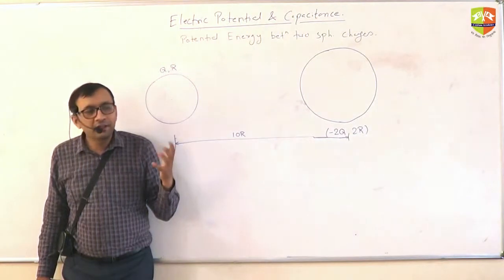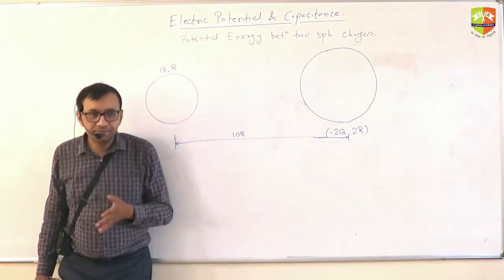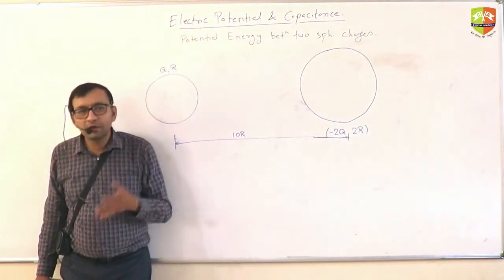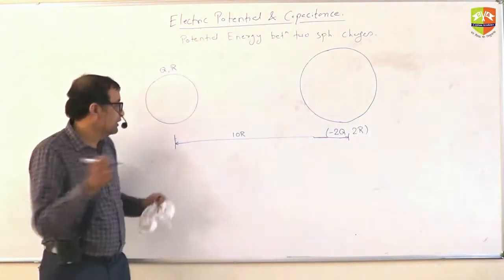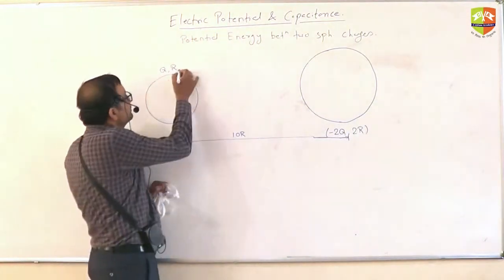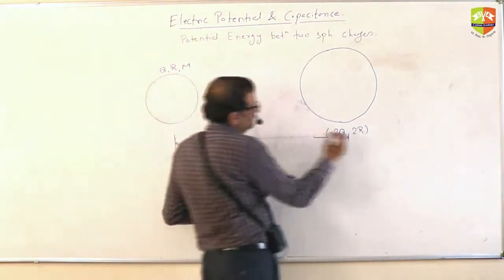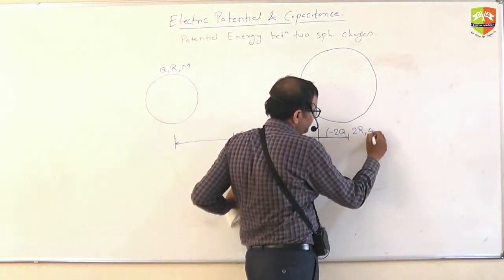Now when they are about to collide, what are their velocities? Suppose this is mass M and this is 4M.